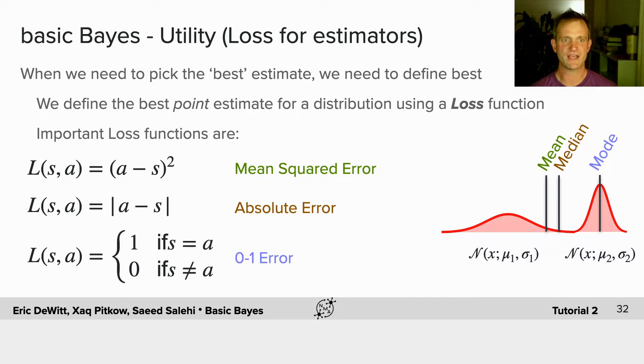Let's think first about estimates. When we need to pick the best estimate of something, we need to define what is best. Remember, an estimate is like taking an action—it's choosing some point to be your estimate. We define the best point estimate for a distribution normally using a loss function.